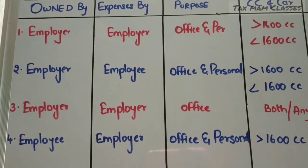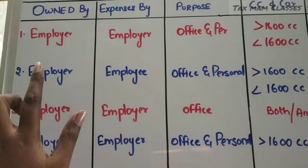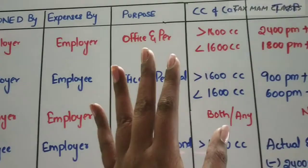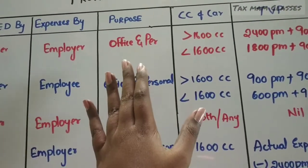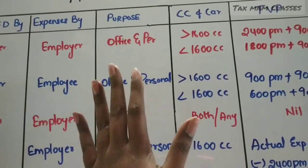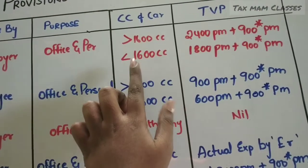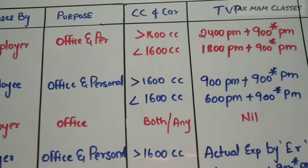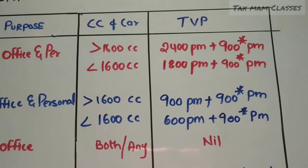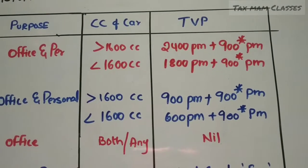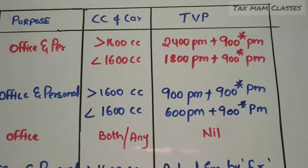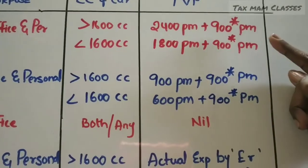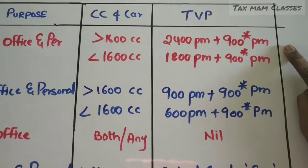In the first situation, the car is owned by the employer, the expenses are also met by the employer, and the purpose is for both office and personal use. If the CC of the car is more than 1600 CC, then the taxable value of perquisite is ₹2,400 per month plus ₹900 per month — but this ₹900 is added only when a driver is employed.